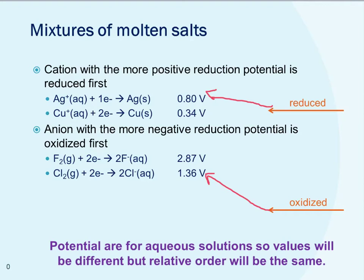If we have a mixture — say silver and copper cations, and fluorine and chlorine anions — we look at the reduction potentials for the aqueous solutions. The more positive reduction potential is the species that is reduced, so silver ion going to silver will be our reduction process rather than copper. Then we look for the anion with the more negative reduction potential to be oxidized first. Chlorine has the more negative reduction potential compared to fluorine at 2.87 volts, so that's going to be our oxidation reaction. Again, the values are for aqueous solution, but the trend and order remain the same.